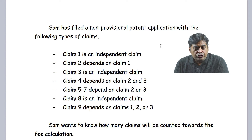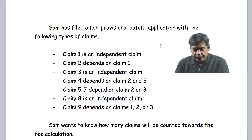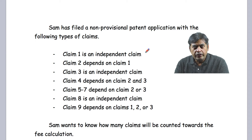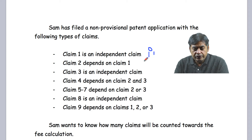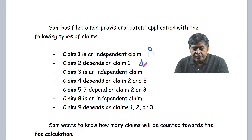The formula here is to come up with a table. What you're going to do is mark independent claims as 'I, 1'. Claim 2 is a dependent claim depending on Claim 1, so we write 'D, 1'. Claim 3 is an independent claim again, so we write 'I, 1'.